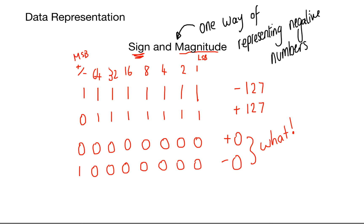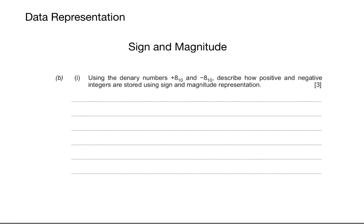We're going to look at how that's rectified later. But first, let's have a look at a typical exam question from the 2016 or 17 paper released from EduCast. Using the binary numbers +8 and -8, describe how positive and negative integers are stored using sign and magnitude representation.